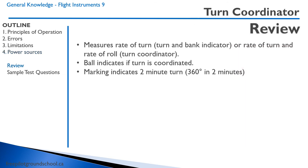Let's review quickly. A turn and bank indicator measures rate of turn, while a turn coordinator measures both rate of turn and rate of roll. The ball indicates if the turn is coordinated, and the marking indicates a two-minute turn, meaning you are turning 360 degrees in two minutes.